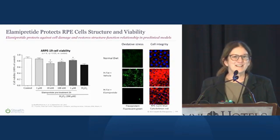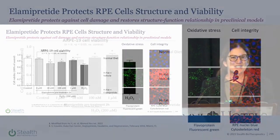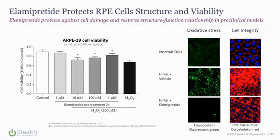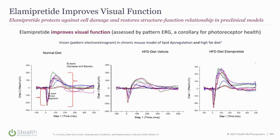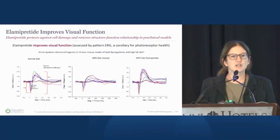We've seen RPE protection in various cell models, but the key preclinical finding was looking at pattern ERG and seeing normalization of the B wave, which is essentially a proxy for photoreceptor function and vision.